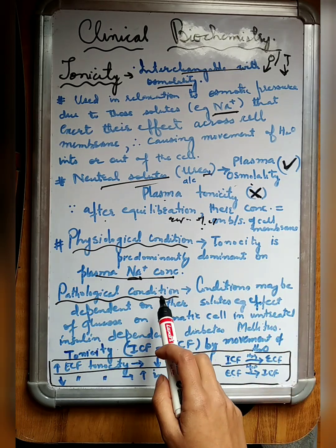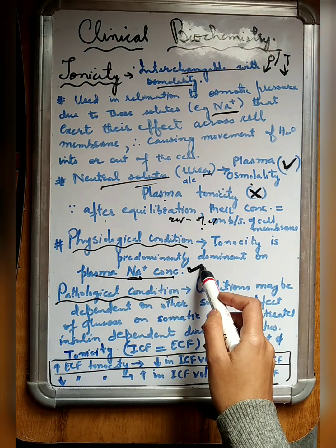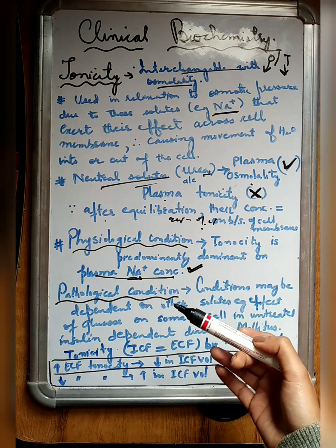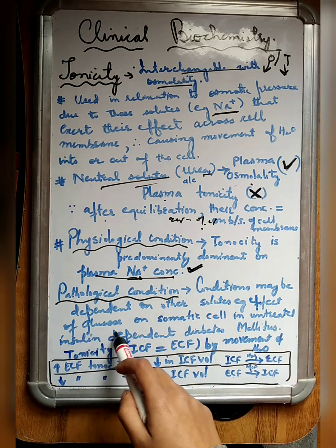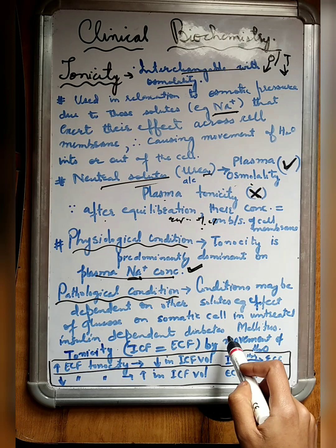During pathological conditions, it may not be dependent only on sodium concentration, but some other solutes can also cause a change in tonicity. For example, the effect of glucose on somatic cells in untreated insulin-dependent diabetes mellitus.